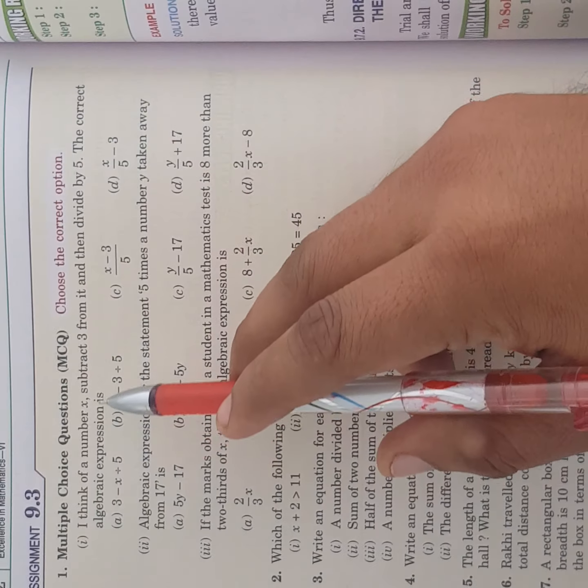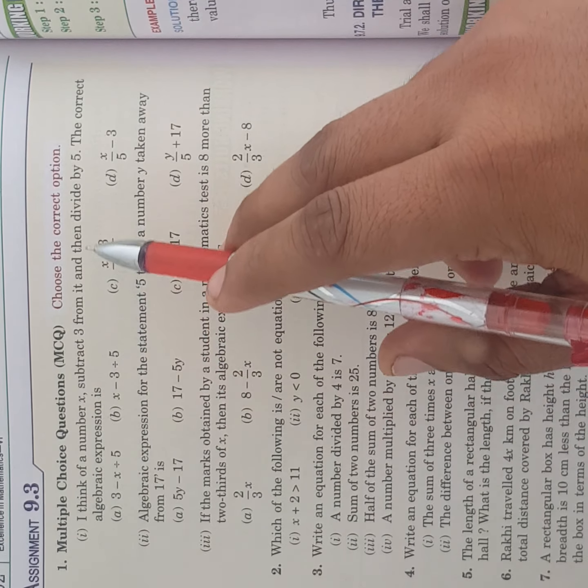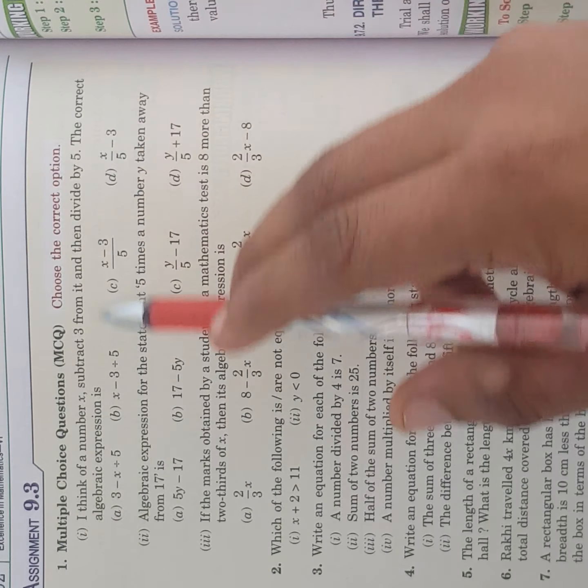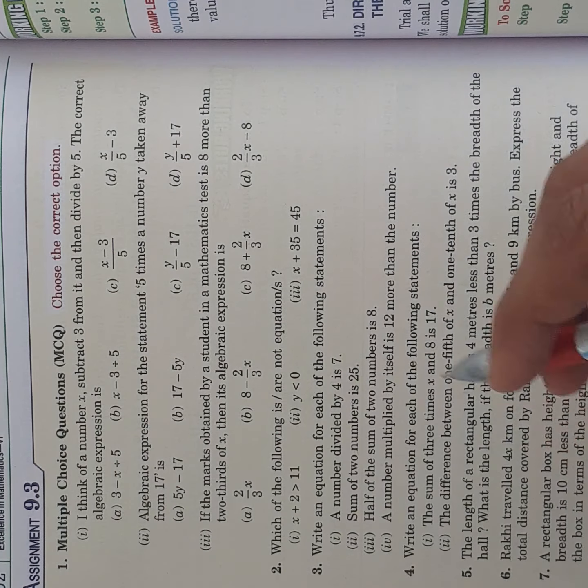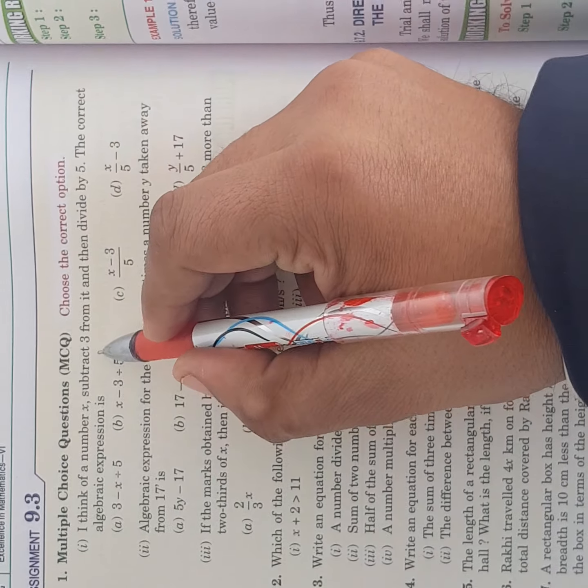The first is the MCQ. I think of a number x, subtract 3 from it and then divide it by 5. The correct algebraic expression is, look I have a number, suppose that x is a number.